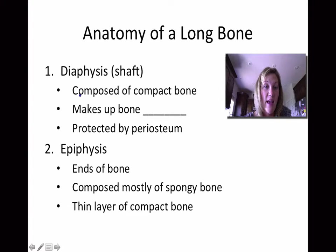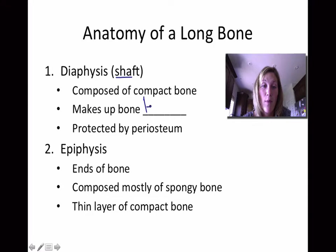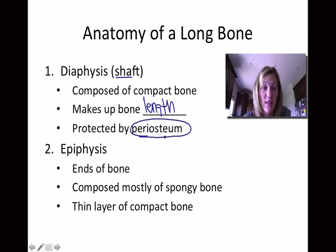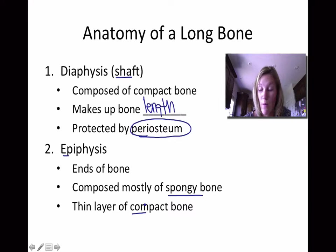So the diaphysis is also the shaft of the bone. It's composed of compact bone and it's going to make up bone length, and it's protected by the periosteum. We're actually going to define that in a couple of slides. Then second up, we have the epiphysis. This makes up the ends of the bone and it's composed mostly of spongy bone. It also contains a thin layer of compact bone as well.